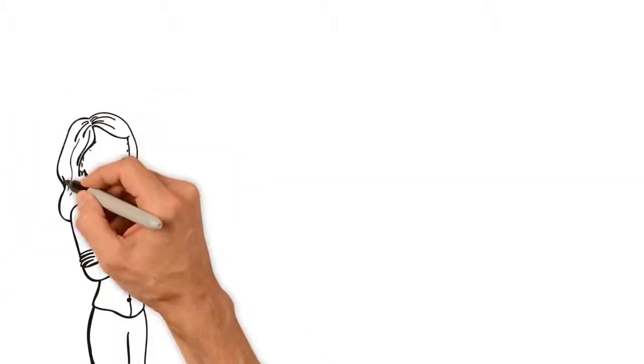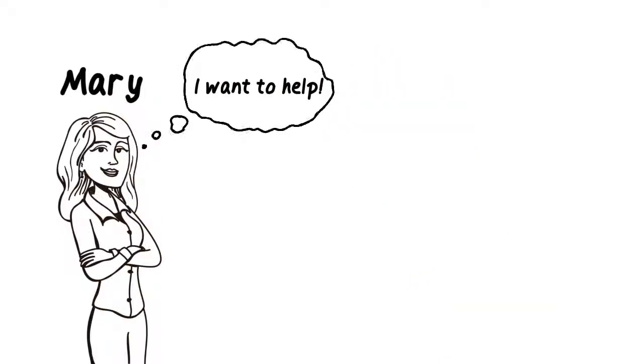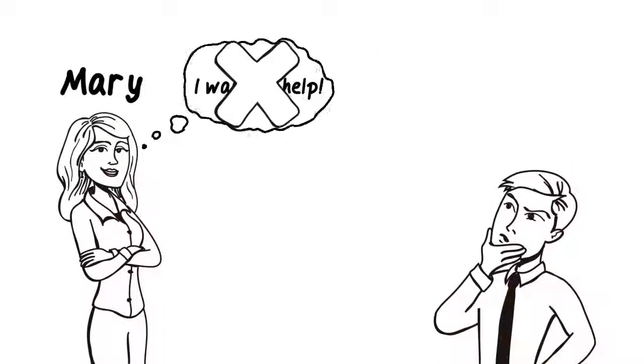His wife Mary would love to help John plan this vacation, but because she single-handedly planned the last two family vacations, John has decided to do this all on his own.